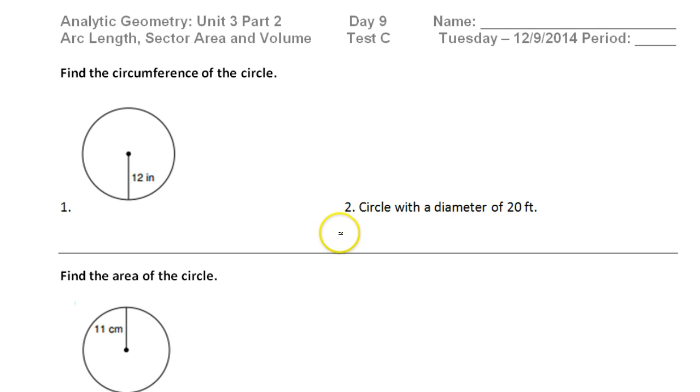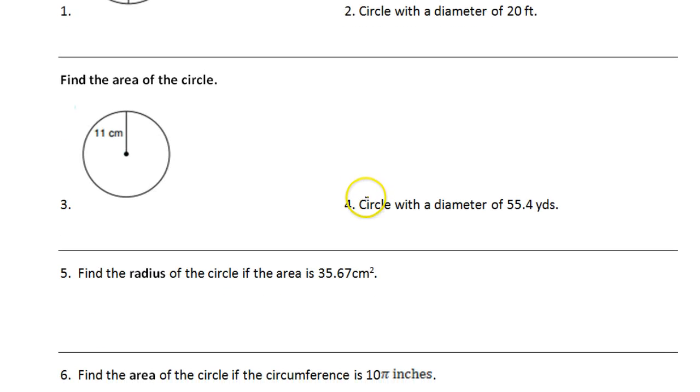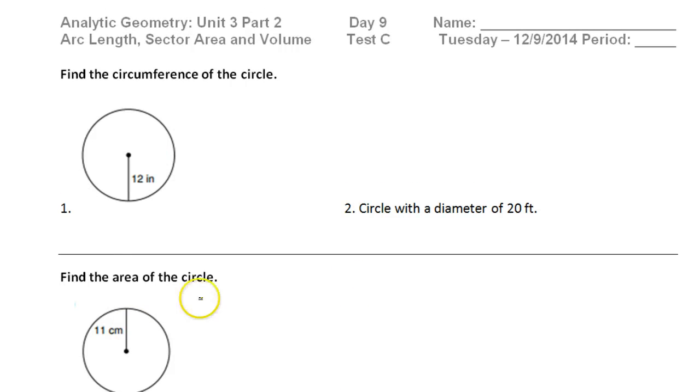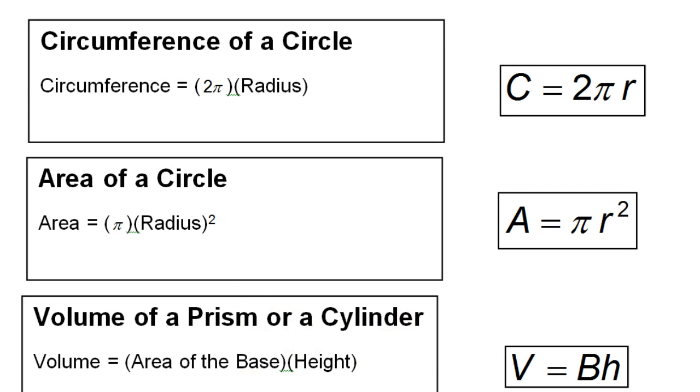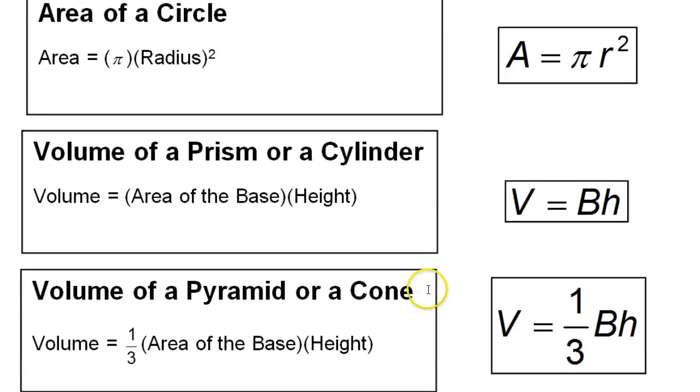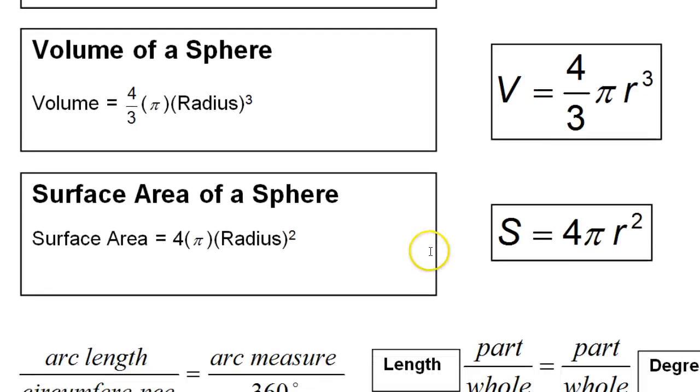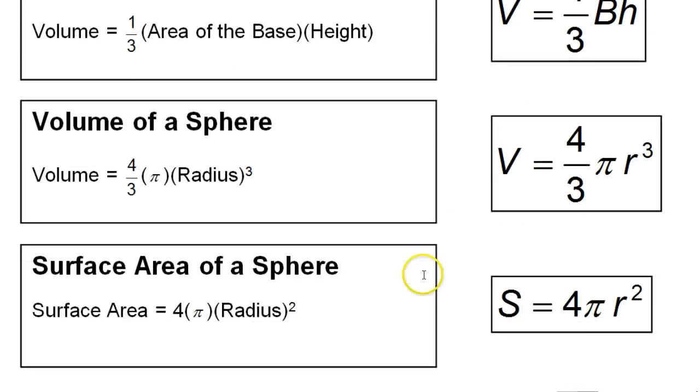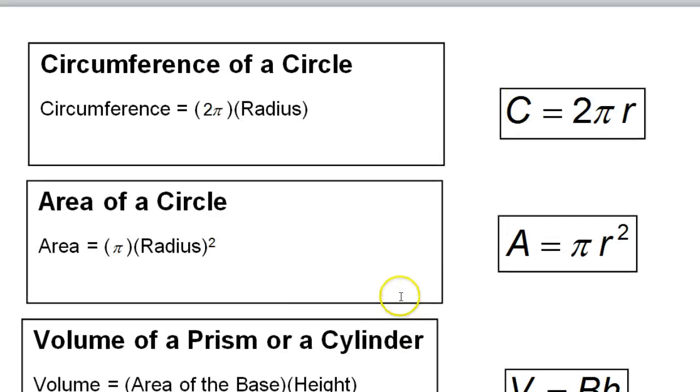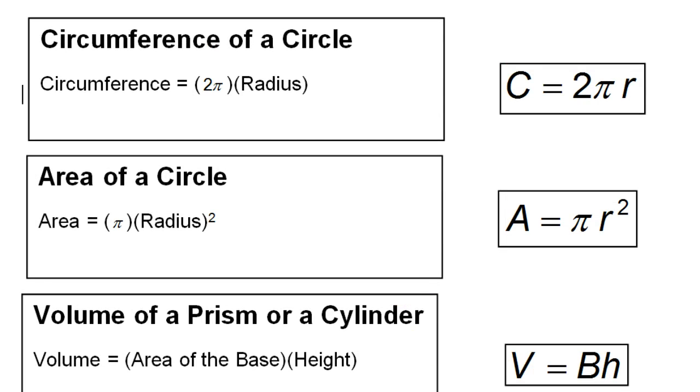This is part one of our review of arc length, sector area, and volume. We'll call it test C. In this video, we're going to focus on looking at circumference and area and radius. These are the formulas for this unit. Please make sure you have each one of these formulas memorized before you go in to take any sort of test on this unit. We'll refer back to these throughout the review here.